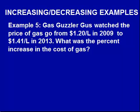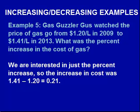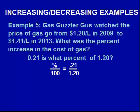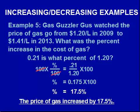Here are a couple more examples on increasing and decreasing percents. Gas Guzzler Gus watched the price of gas go from $1.20 per liter in 2009 to $1.41 per liter in 2013. What was the percent increase in cost? The price increased by $0.21, so our percent equation becomes: 0.21 is what percent of $1.20? Solving for percent, we multiply both sides by 100 and come up with an answer of 17.5% — that was the increase in the price of gas.